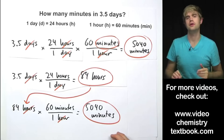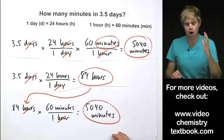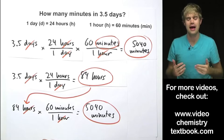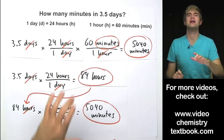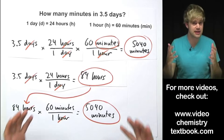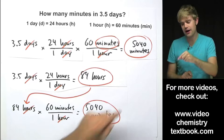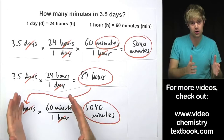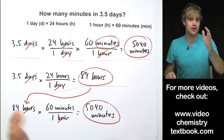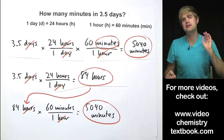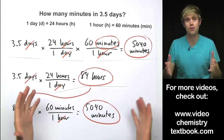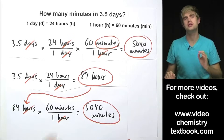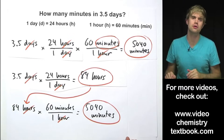Whenever you're solving these conversion factor problems, always try to make sure that you really understand what's going on. Ask yourself: am I multiplying here or am I dividing? Does it make sense that I'm doing that? And then finally, look at the answer you end up with and ask: is it bigger or smaller than the number I started with, and does that make sense? That way you won't just be a unit conversion robot — you'll actually understand what you're doing, and that's the most important thing. Thank you.